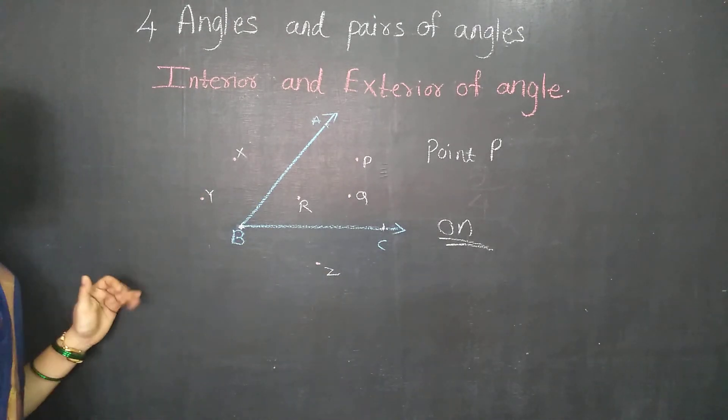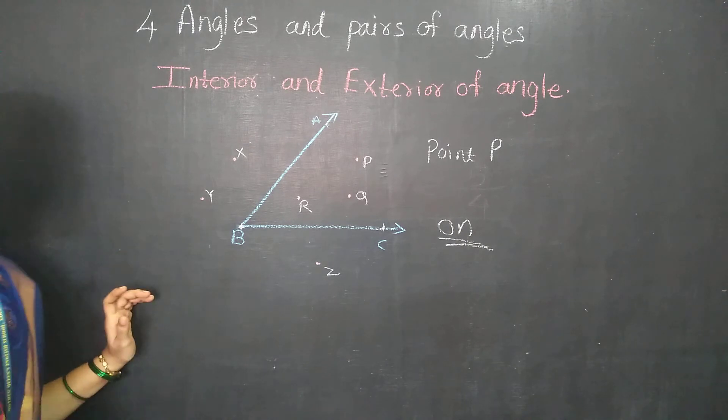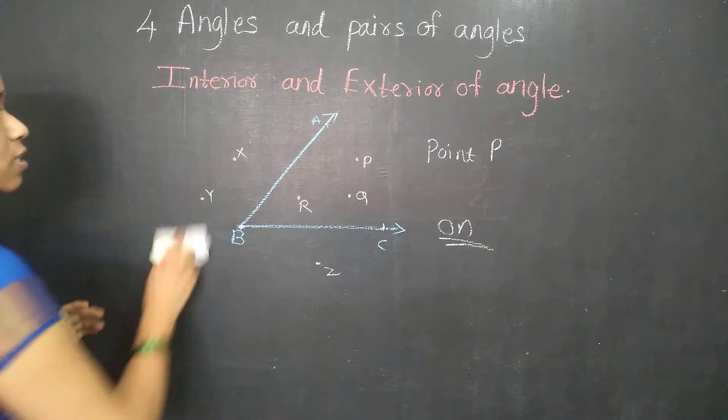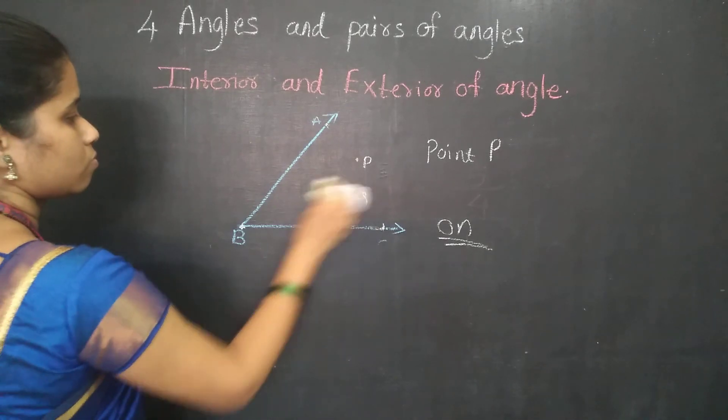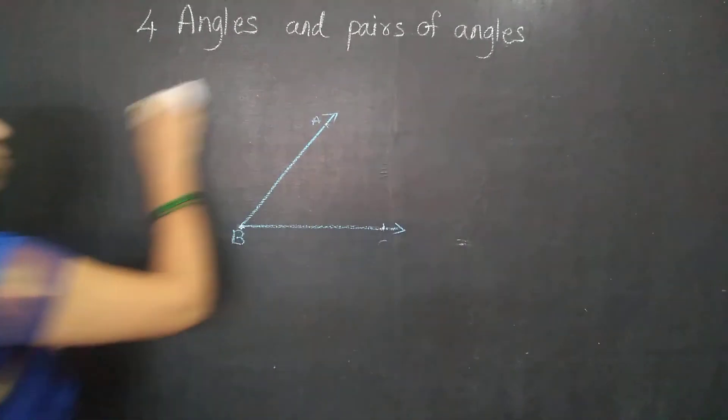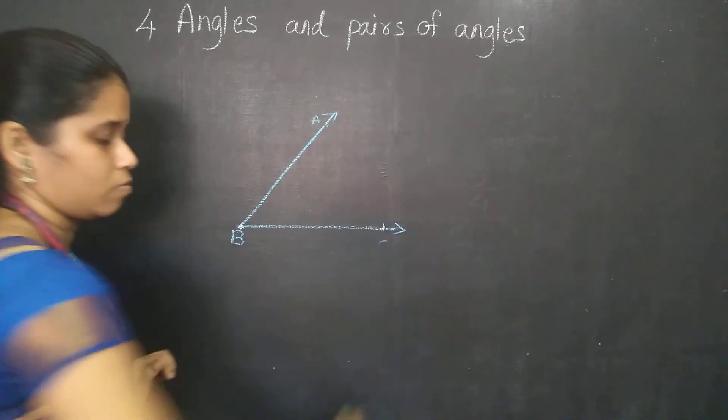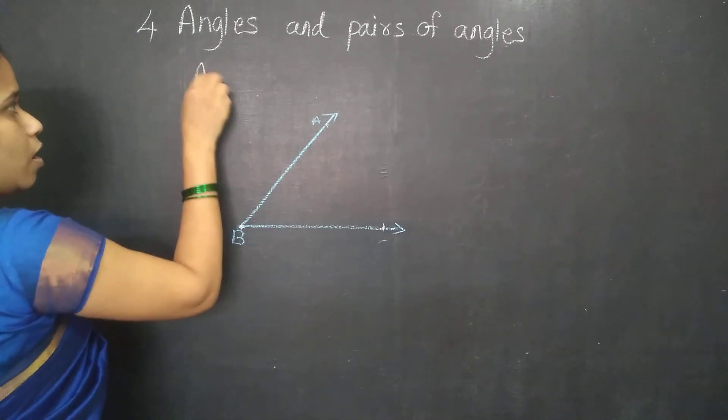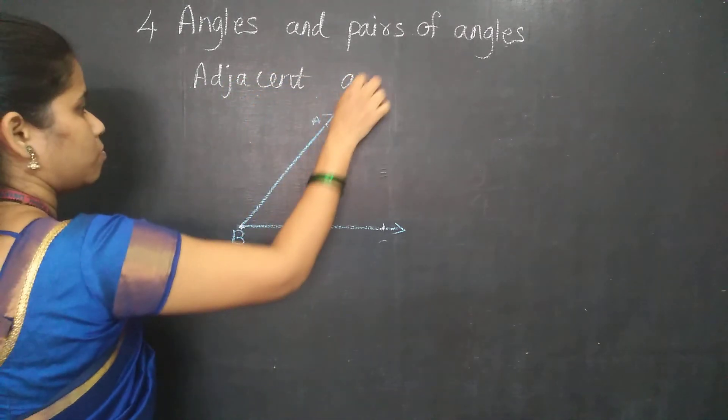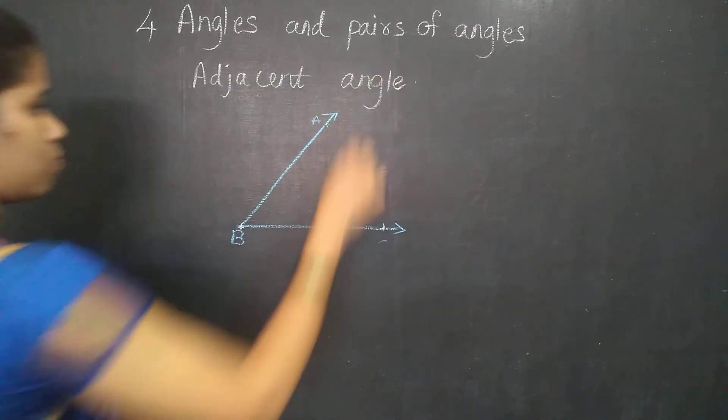This was the first part of the interior and the exterior of the angles. The second part is about the adjacent angle. All right, let's go.